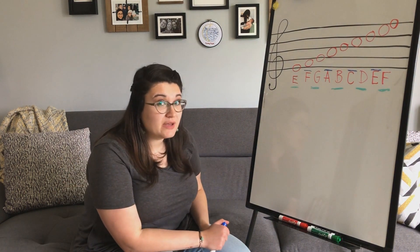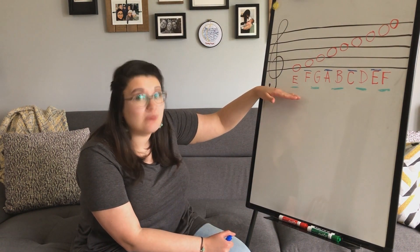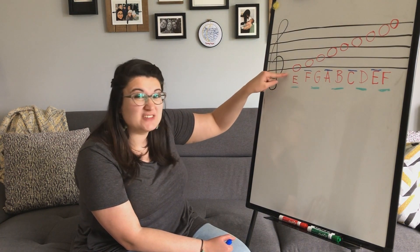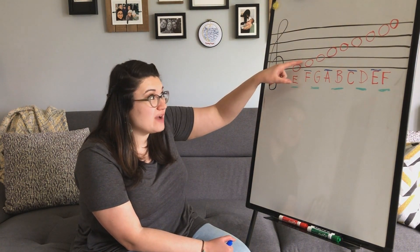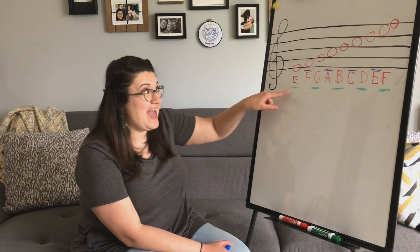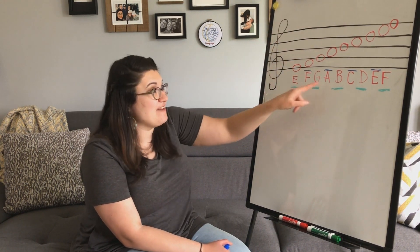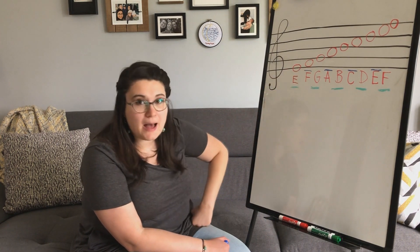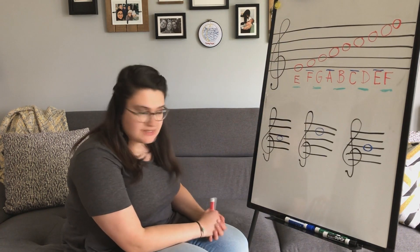The most important thing we have to remember is that we always start at the bottom, right? Whenever we're figuring out a note, if we're thinking the lines, we have to start down here at the bottom. If we're thinking the spaces, we also start at the bottom. Every Good Boy Does Fine — Every starts at the bottom, it doesn't start at the top. F, A, C, E — face — F starts down at the bottom. It doesn't start at the top.